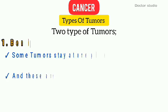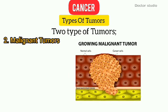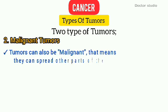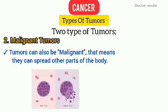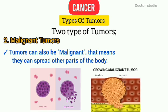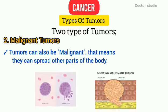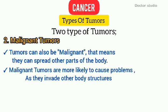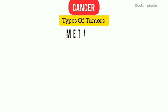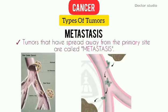Number 2: Malignant Tumors. Tumors can also be malignant or cancerous, which means they can spread to other parts of the body. Malignant tumors are more likely to cause problems as they invade other body structures. Tumors that have spread away from the primary site of cancer are called metastasis.